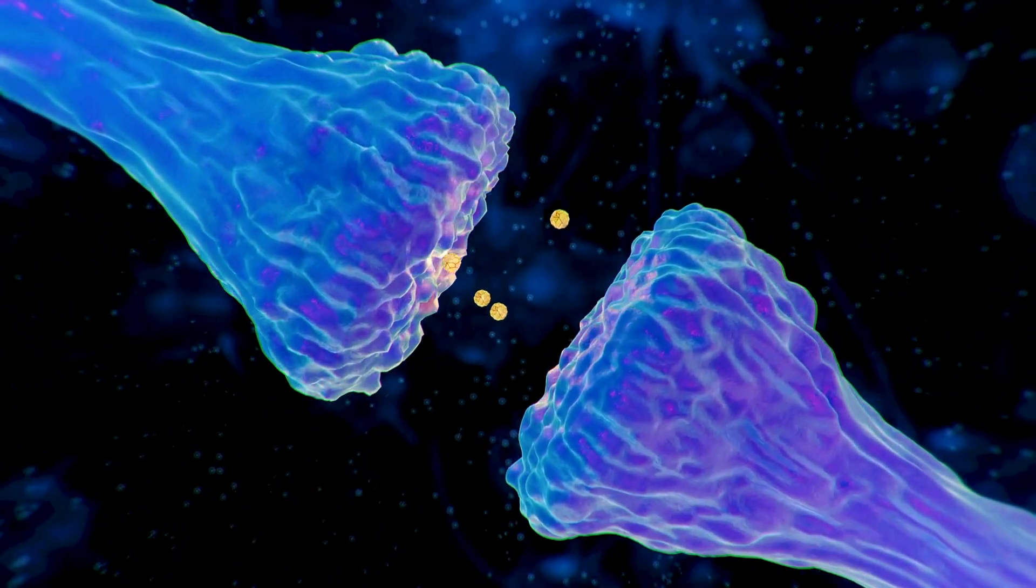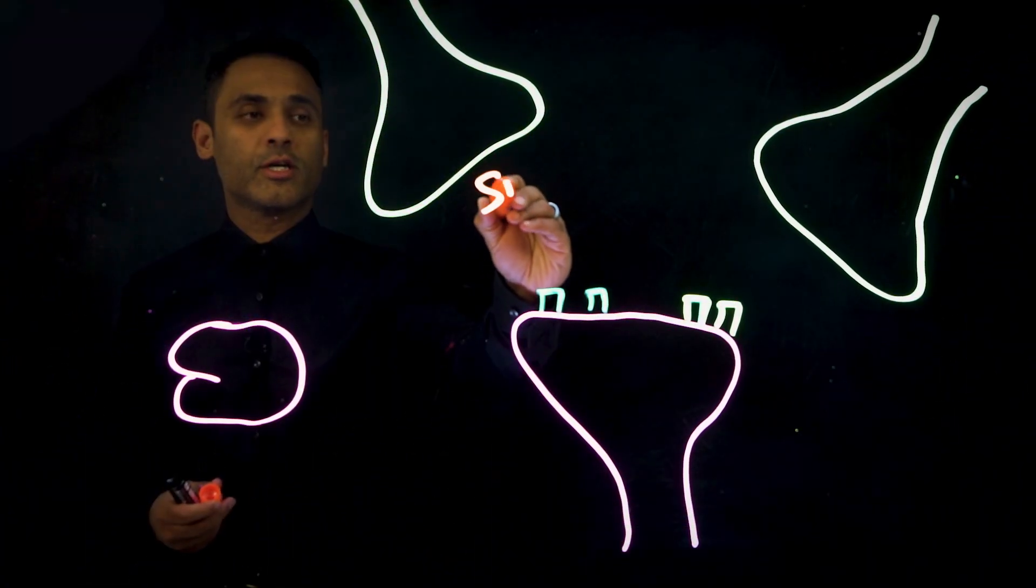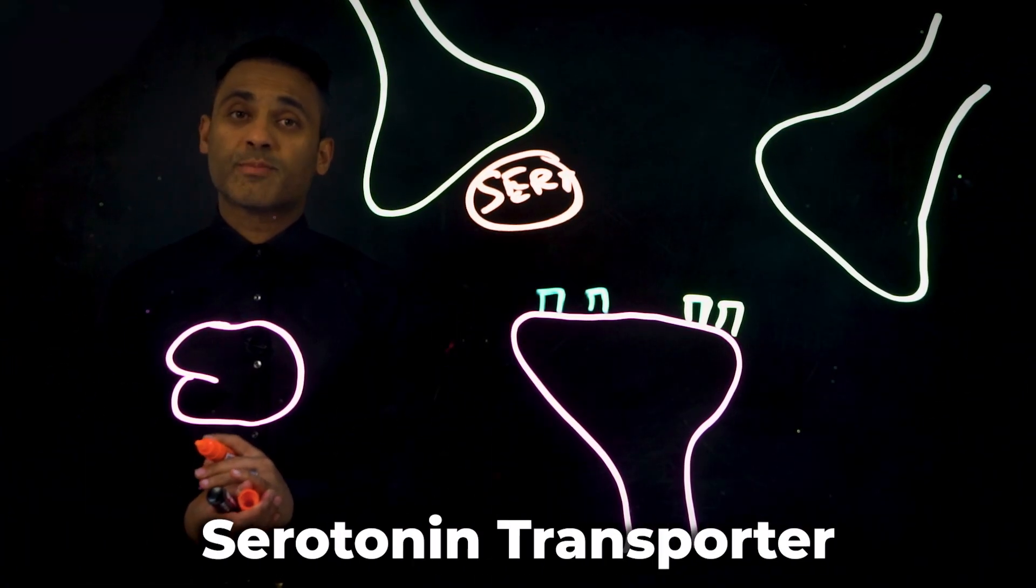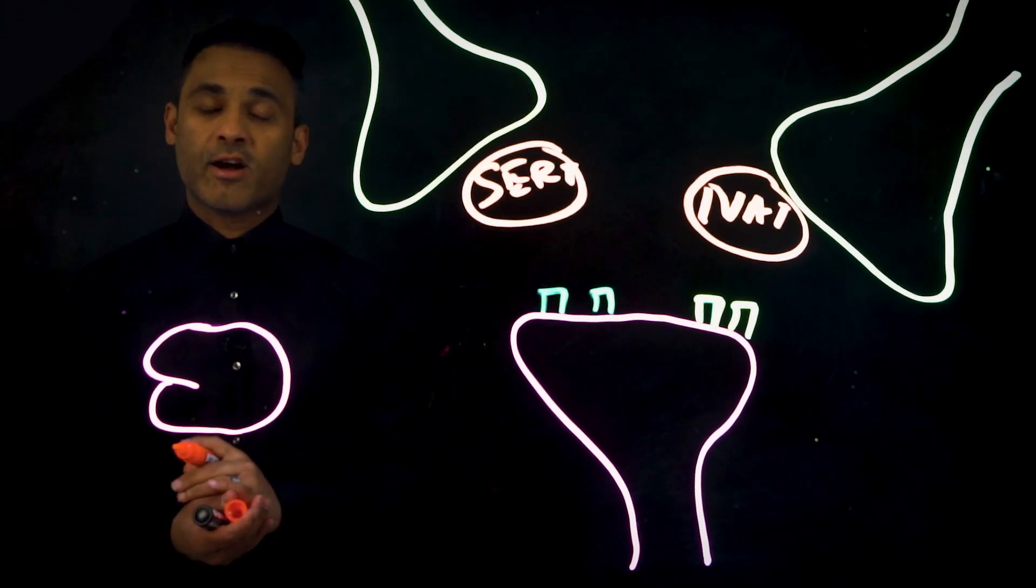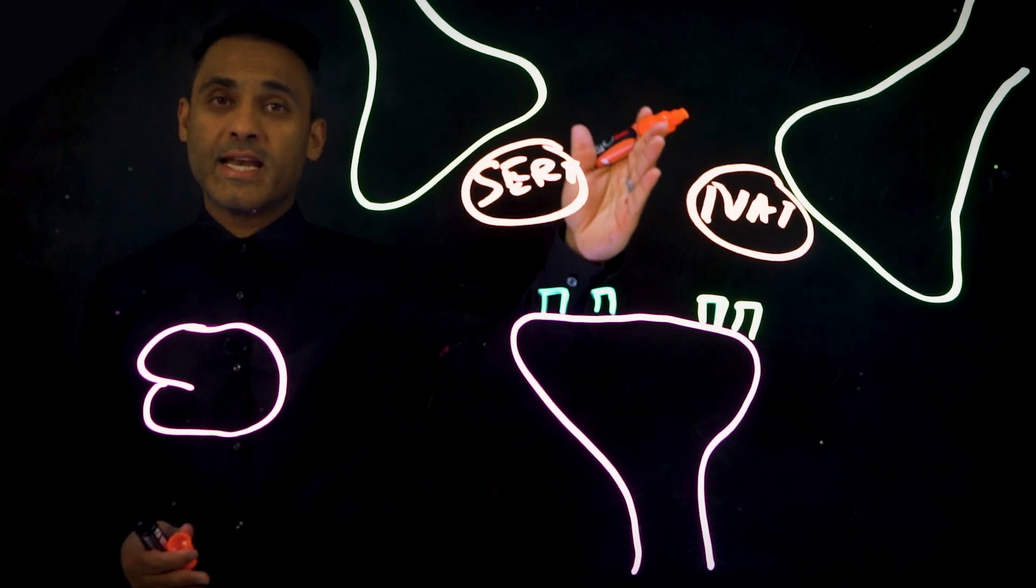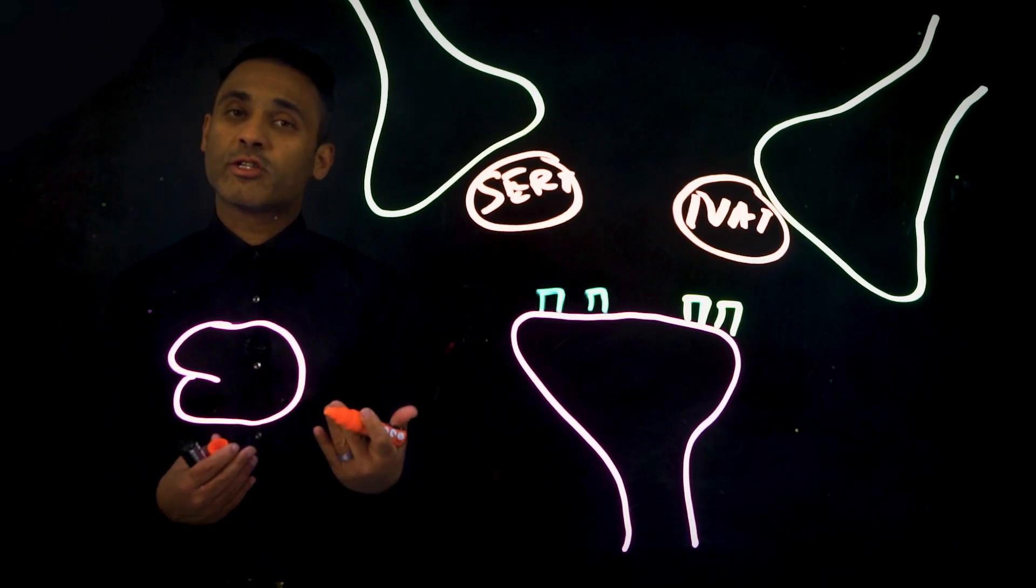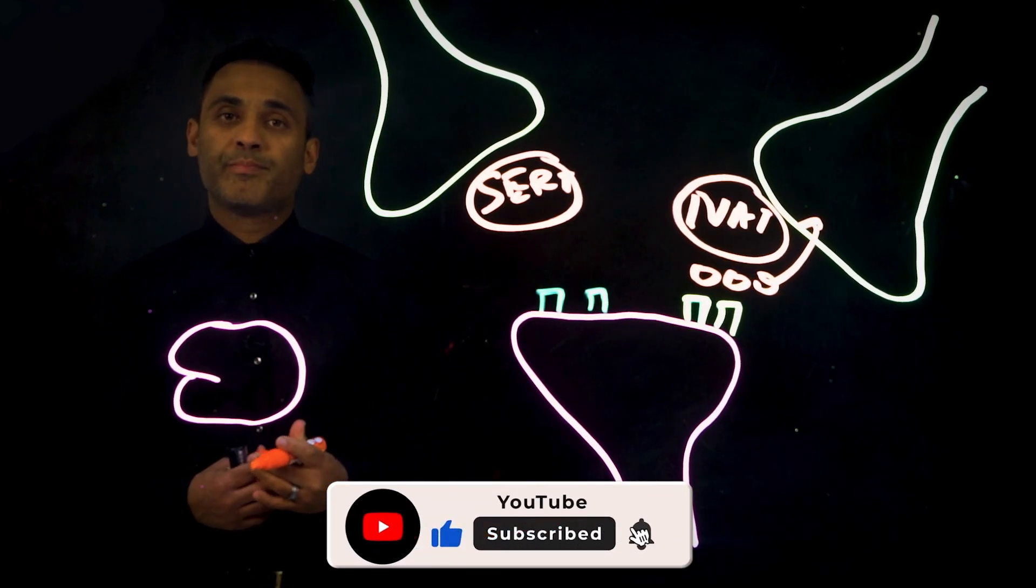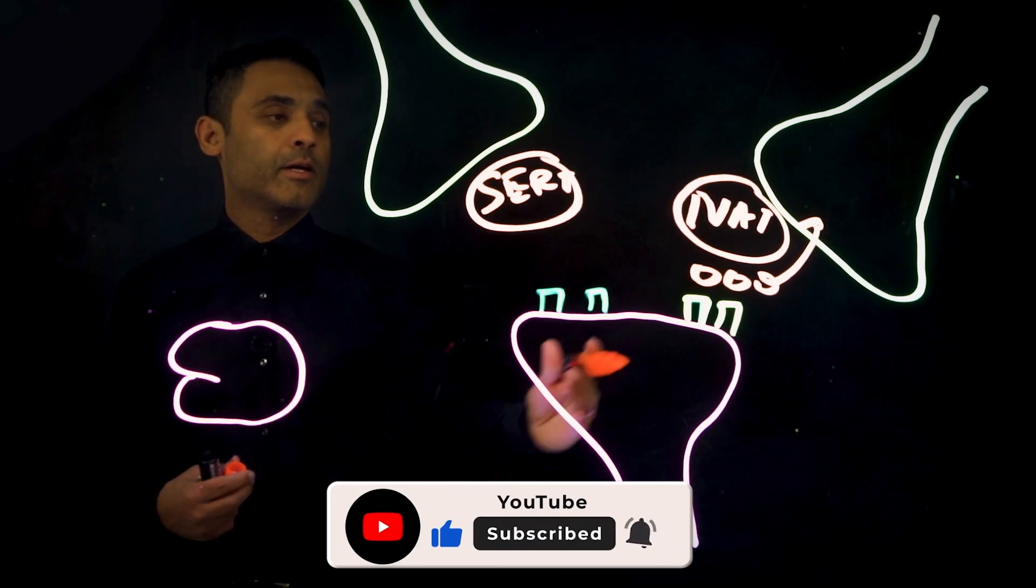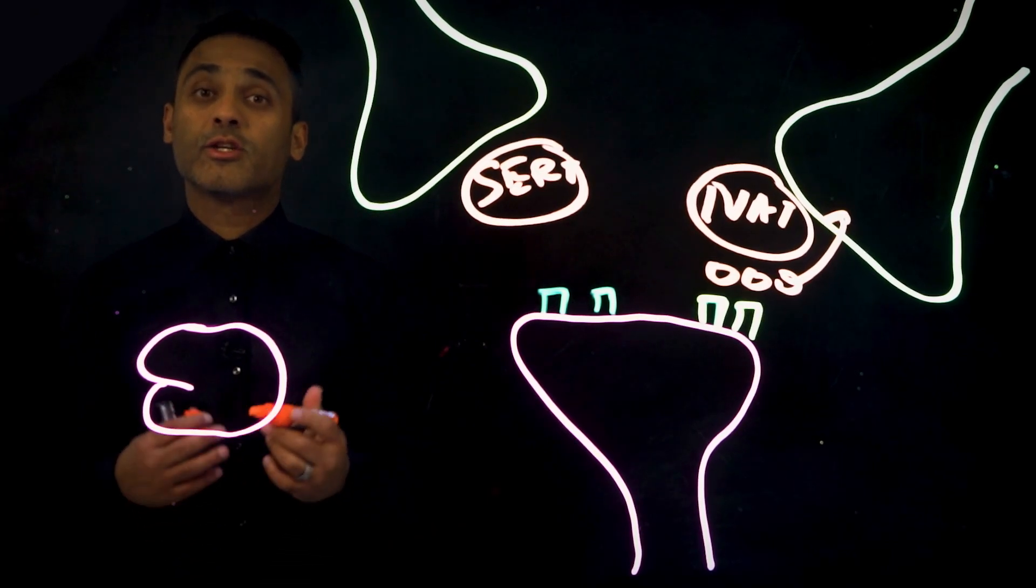Now we know that when we talk about reuptake inhibitors, we've obviously got SIRT here which is the serotonin transporter. But when it comes to SNRIs we also have the NAT, which is the noradrenaline transporter. The function of the transporter is to take up - and that's why it's called reuptake - noradrenaline from the synaptic cleft into the presynaptic neuron.